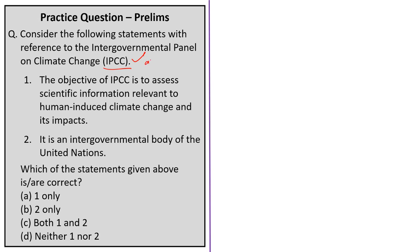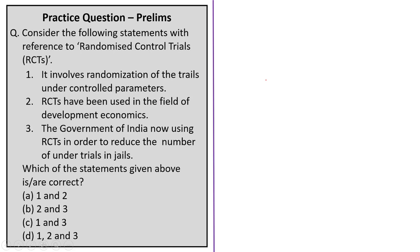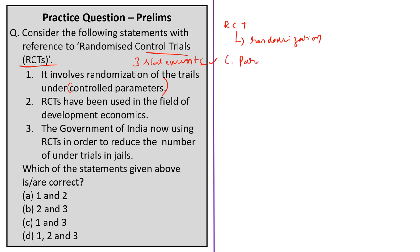Now let us discuss the practice prelims questions. The first question is with reference to randomized control trials, with three statements to evaluate. Statement one says it involves randomization of trials under controlled parameters — this is correct, as RCT revolves around randomization of trials under controlled parameters considering limited sample size and limited influencing parameters.